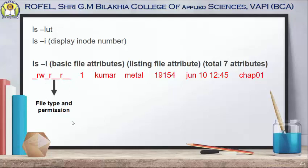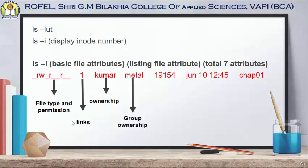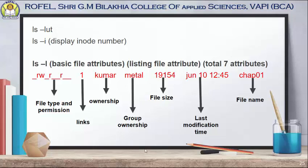The second column shows the links, the third shows the ownership, the fourth shows group ownership, the fifth shows the file size, the sixth shows the last modification time, and the seventh is the name of the file. So ls -l displays output in seven columns: file type and permissions, links, owner, group ownership, file size, last modification time, and file name. The ls command is very important in Unix.